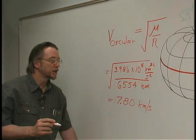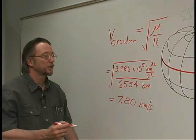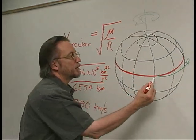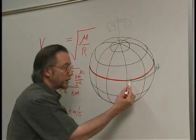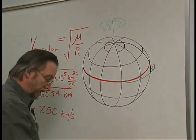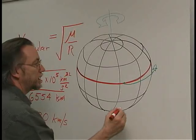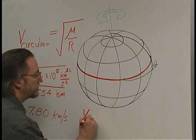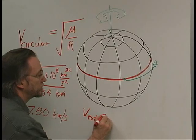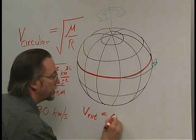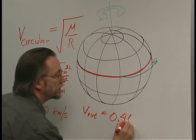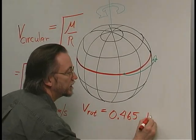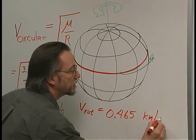Let's see what happens when we launch from a rotating Earth. If we launched from the equator, we gain a speed from the fact that the Earth is rotating of 0.465 kilometers per second.